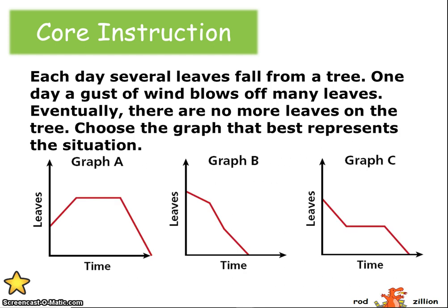Here, there's a relationship between the number of leaves and time. Each day several leaves fall from a tree. One day a gust of wind blows off many leaves. Eventually there are no more leaves on the tree. We're going to choose the graph that best represents this situation. Notice that we are comparing leaves over the course of time.